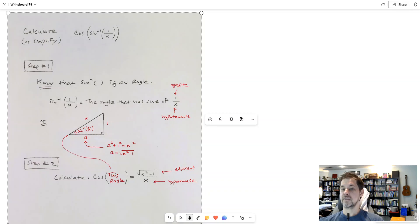And sine inverse is an angle. All right. That's what it is. An angle is something that you can see, something you can visualize.